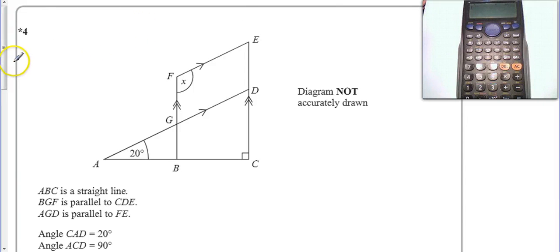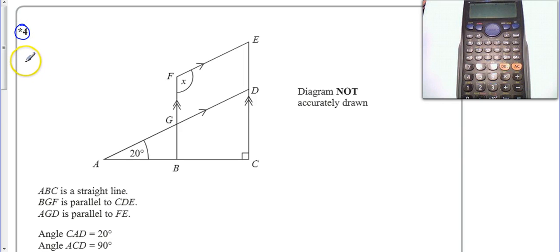Okay, so here we go with question 4. You'll notice that this is a star question, which means that we've got to explain our working, and that there are marks available for giving reasons for our answers.